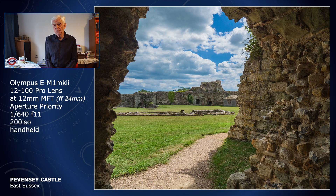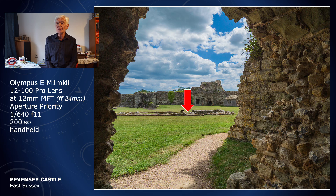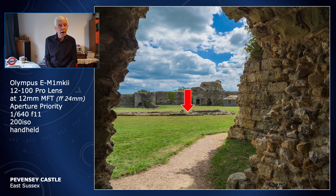To increase depth of field in this example, bringing the foreground into focus, I detach autofocus and move the focusing point forward to around 50 feet. This of course brings the depth of field scale forward without losing sharpness at infinity. This is the hyperfocal distance — that is to say, creating the greatest depth of field at a given aperture and lens focal length. It can be increased or decreased by lens choice and aperture, the exact amount dependent on sensor size.